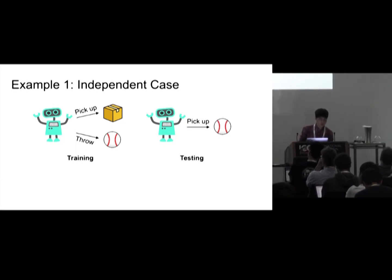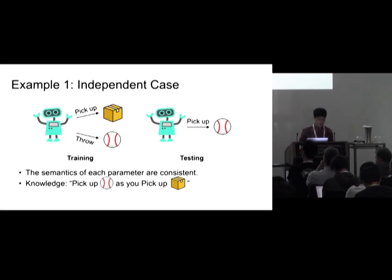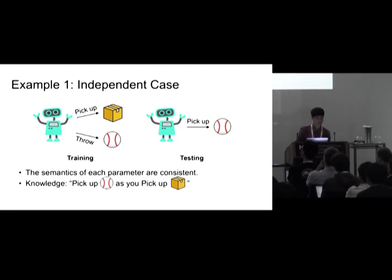In order to generalize over this, the agent has to assume that the semantics of each parameter are consistent regardless of the other parameters. This means the agent has to pick up the ball as it picks up the box, because the semantics of 'pick up' are the same as before. This is the most straightforward generalization scenario, but it is not always the case in real-world applications.